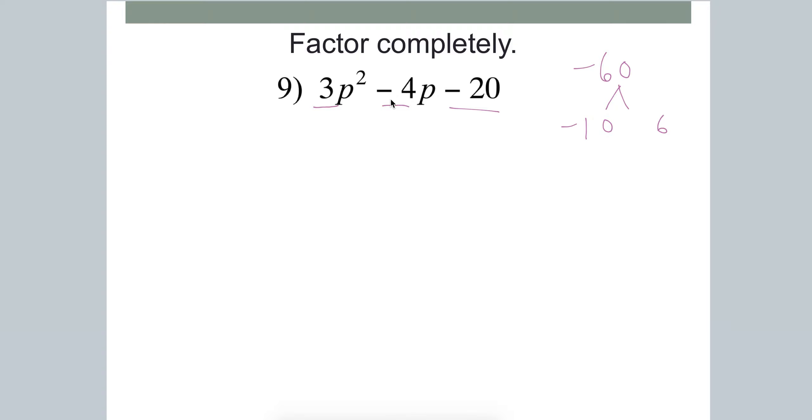So now once you have those two numbers, you're going to use those two numbers to break this middle term up. So 3p squared stays the same. Then minus 10p, coming from the negative 10. And then plus 6p, because that's a positive. So I'm breaking the negative 4p up into these two numbers. And then minus 20 stays as it is.